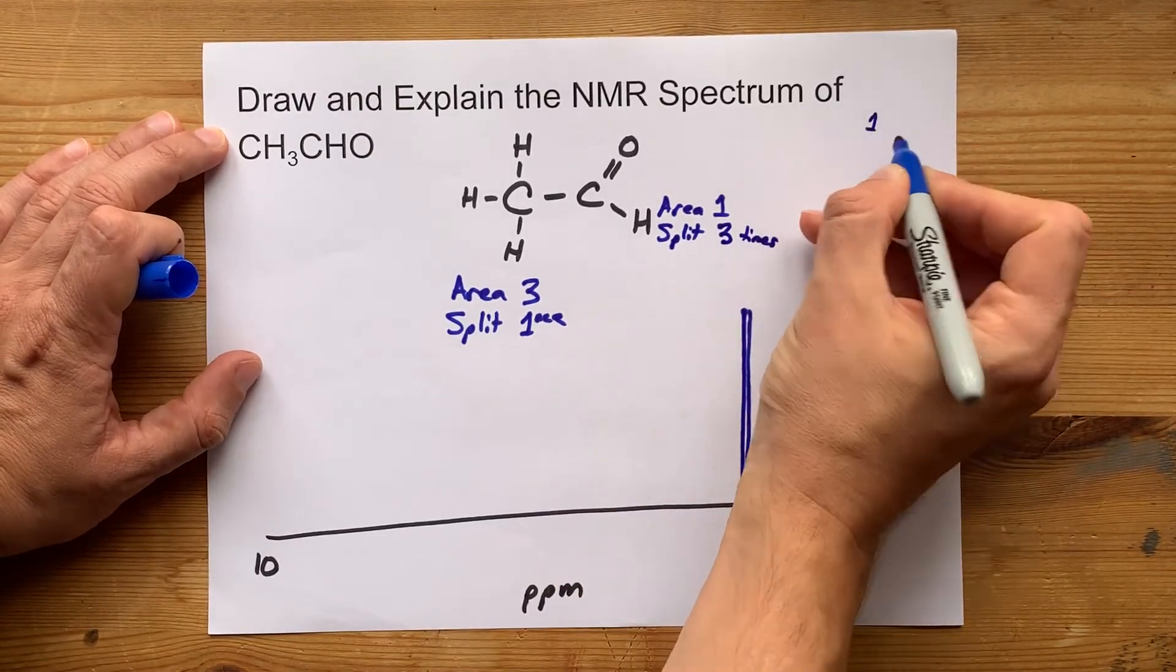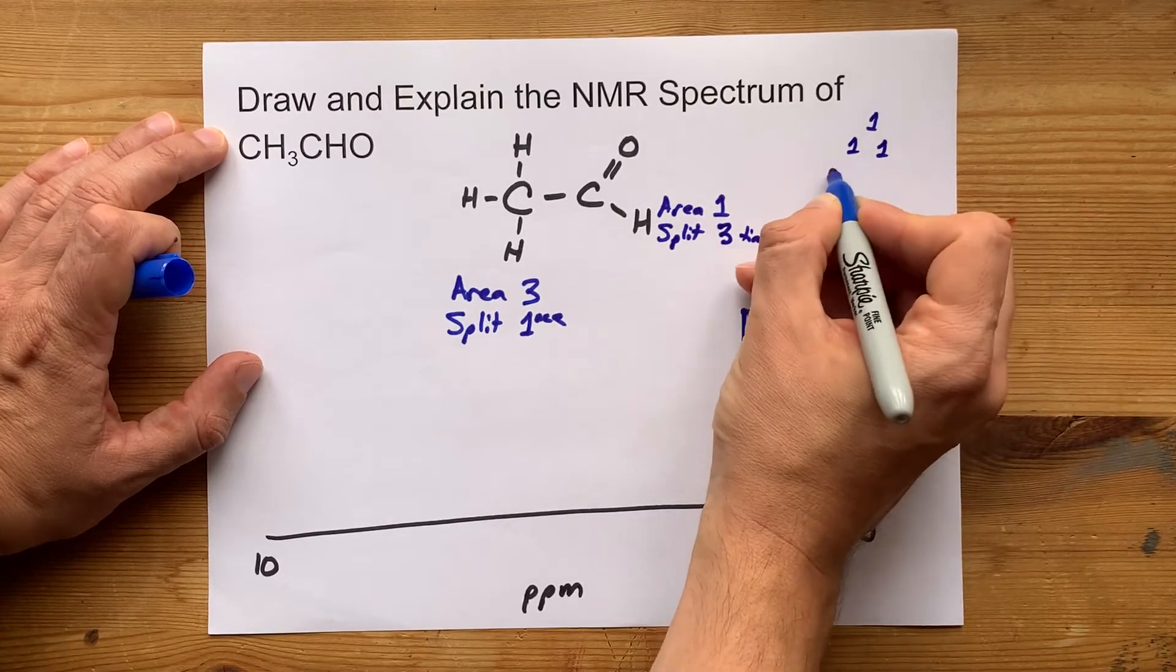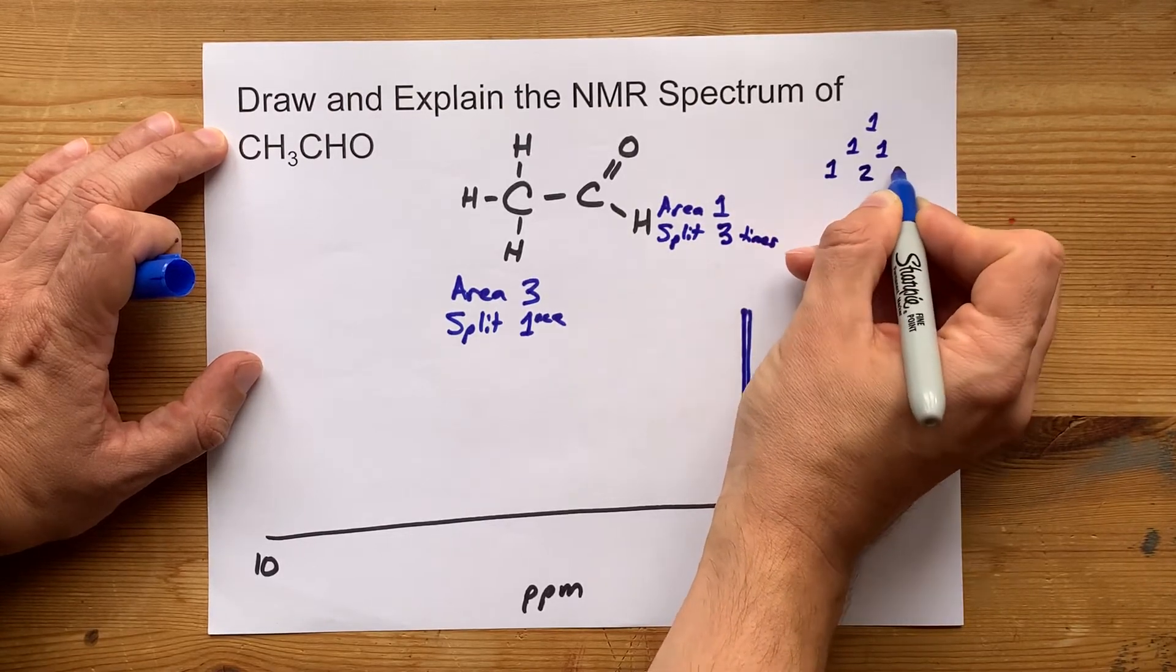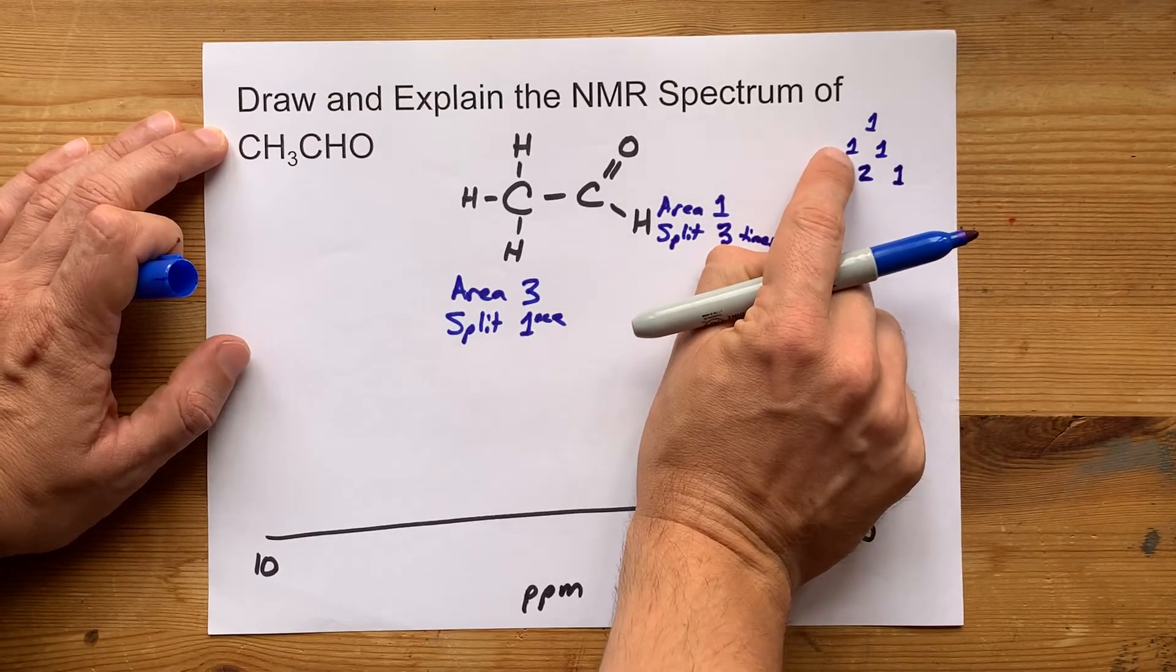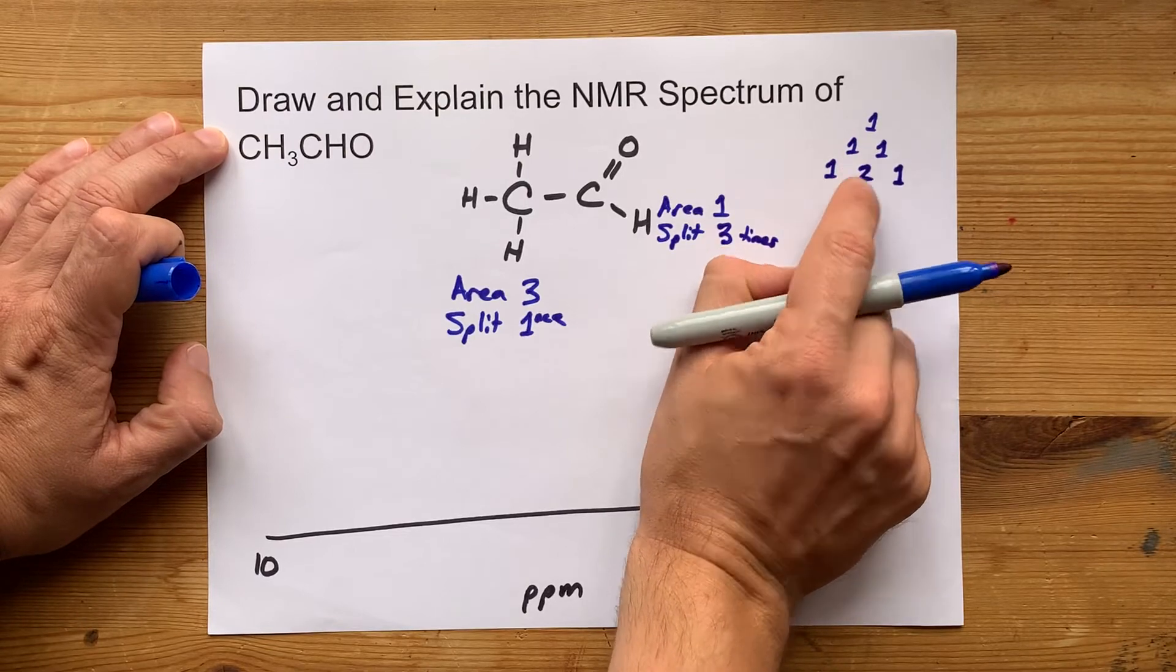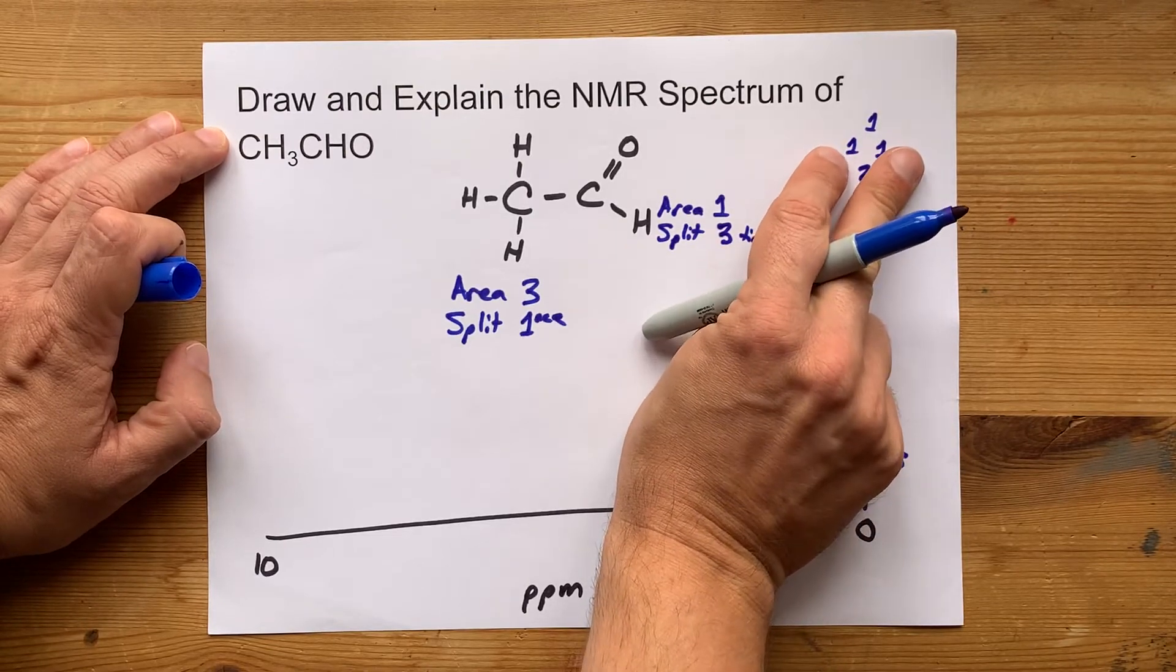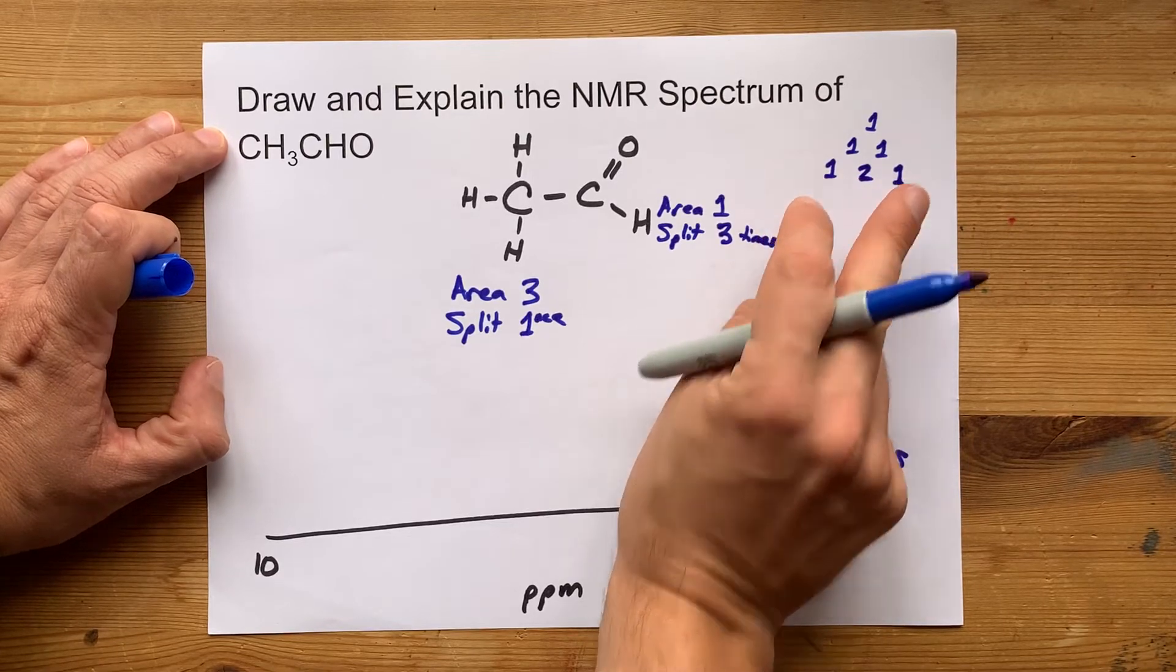Now when one thing splits into two, and then those two split themselves, you end up with a pattern like one-two-one. This one will split into two, and this one will split into two, but these two ones overlap in the center, so it ends up being double the height of the two on the ends.